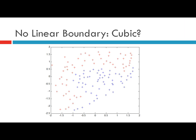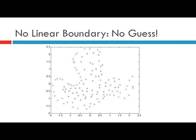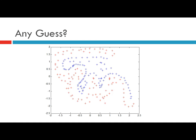Let us increase the complexity of the problem. With this data set, it is hard to guess what the degree of the polynomial should be if using polynomial basis functions. It seems like a cubic or degree-four polynomial may solve this problem, but again it's hard to guess. With an even more complex data set, we cannot make any guess about what kind of polynomial basis function will separate the two classes. It is really, really tough to determine the basis functions.